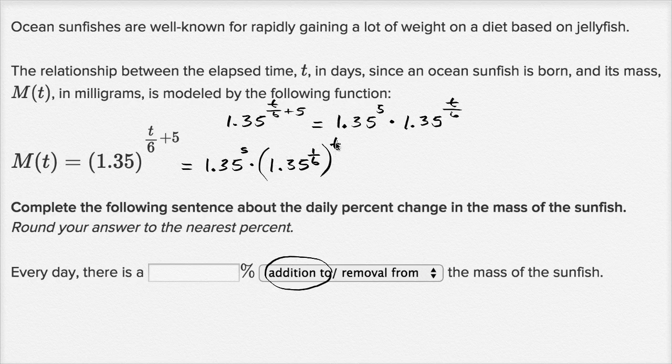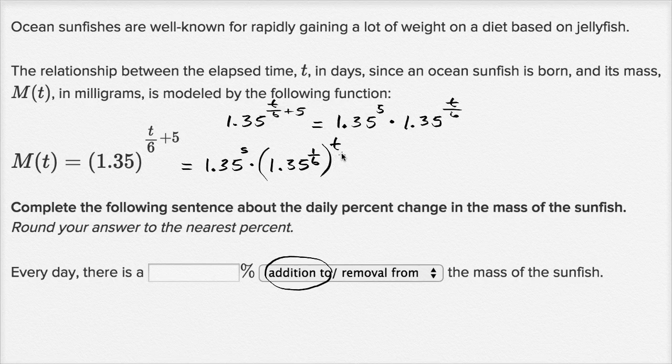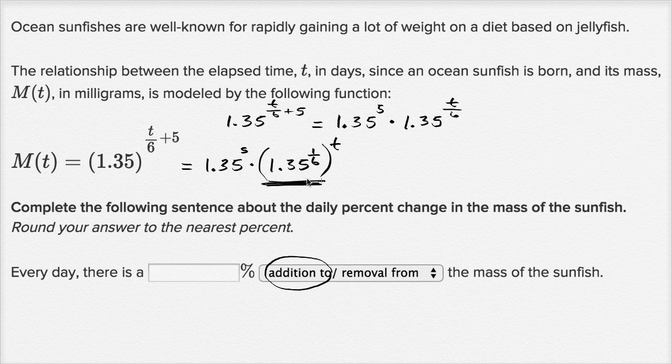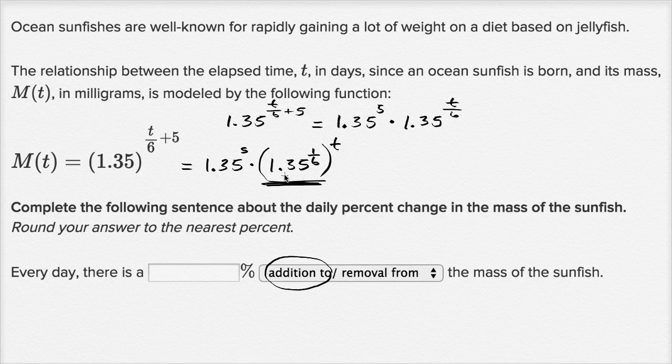So let's think about it. Every day as t increases by one, now we can say that we're going to take the previous day's mass and multiply it by this common ratio. The common ratio here, the way I've written it, isn't 1.35. It's 1.35 to the one sixth power.